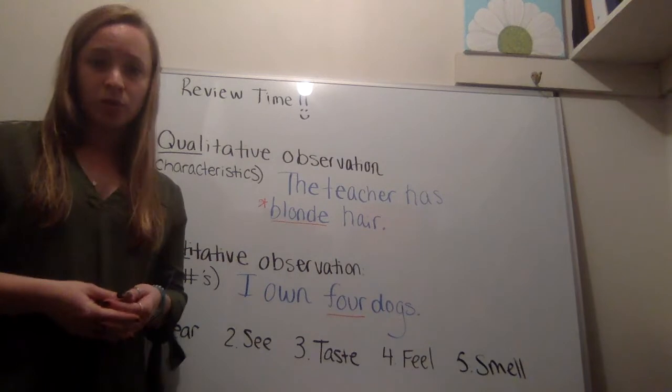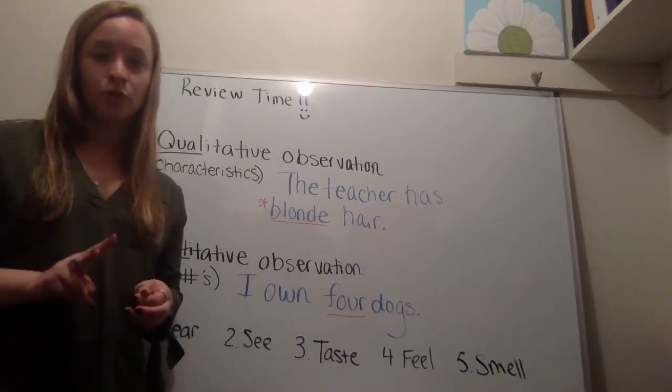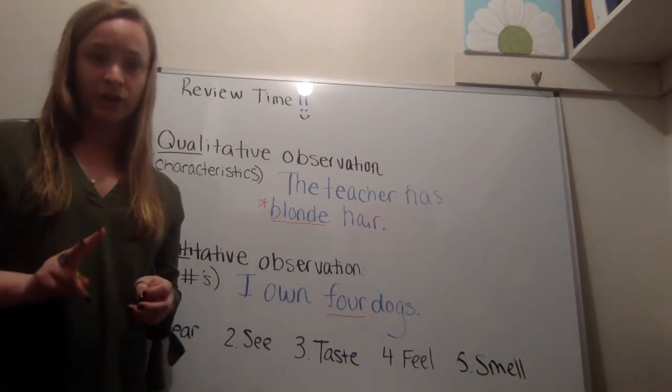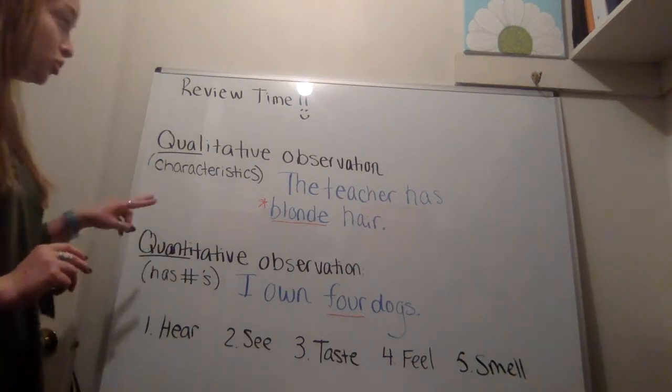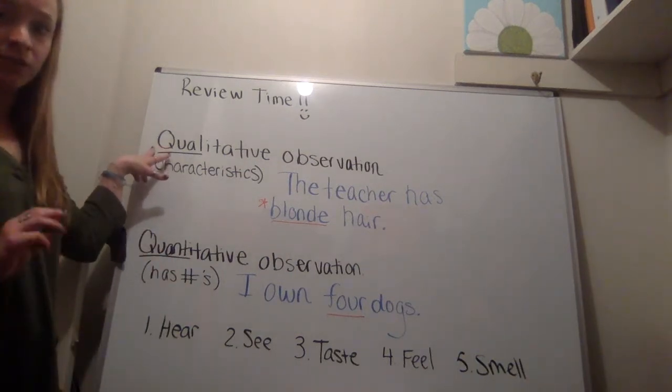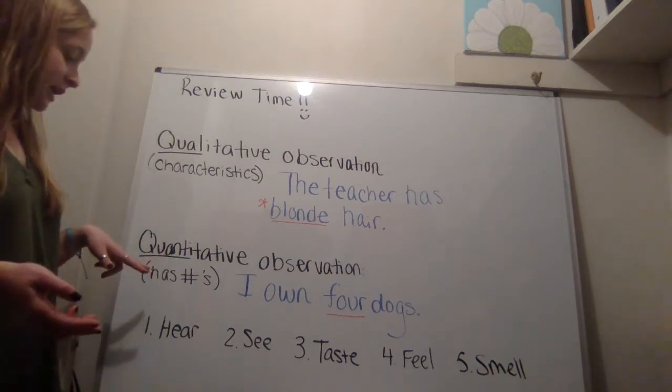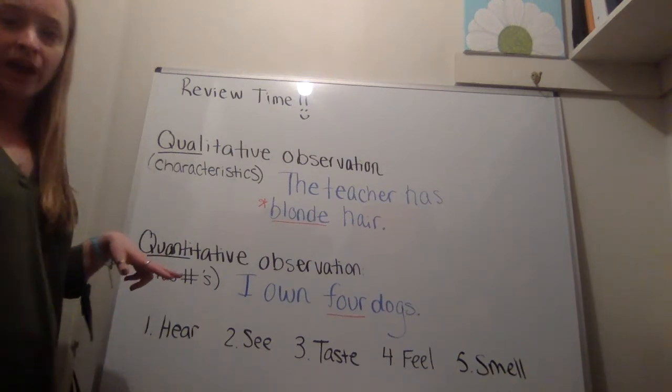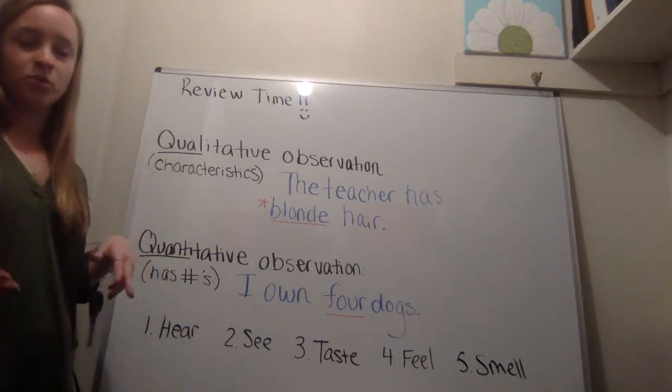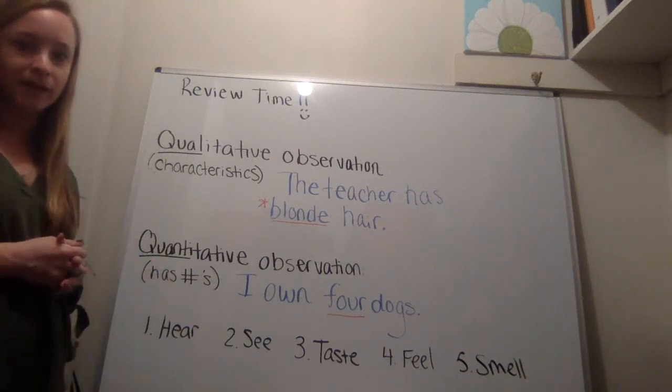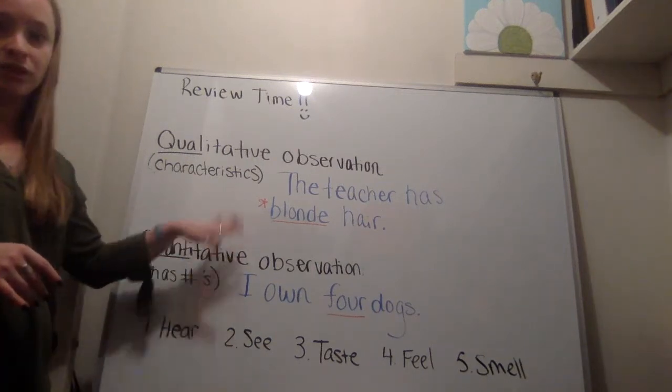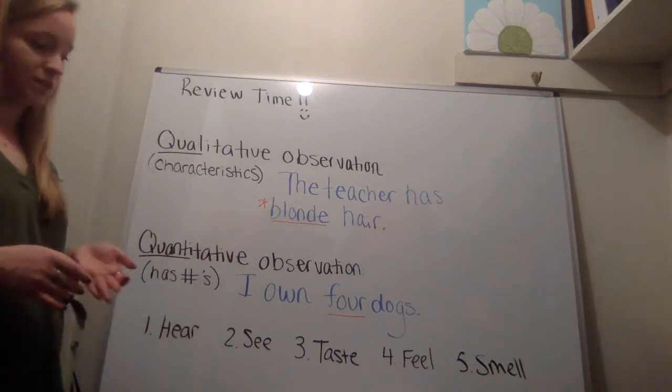So for your discussion post this week, I'm going to ask you guys to do two examples for each, for each type of observation. So you're going to make two qualitative observations and two quantitative observations. Now, you can say something in your house. You can make one up. You can think back to our classroom and some of my examples. I'm going to ask that you don't use either of these two, obviously, just because I've already given them.